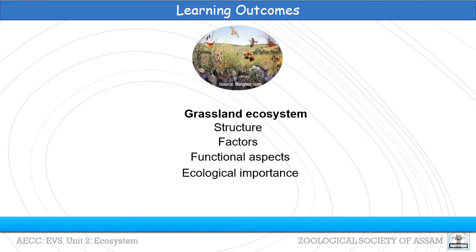Learning outcomes. We shall be studying what is a grassland ecosystem, its structure, factors influencing the ecosystem, functional aspects and ecological importance.